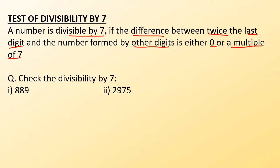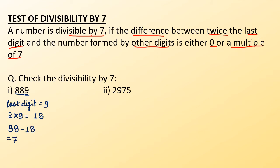First is 889. We take the last digit, which is 9. Twice the last digit: 2 multiplied by 9 gives us 18. The remaining number is 88. Now subtract 18 from 88, which gives 70. As you can see, 70 is a multiple of 7, which means that 889 is divisible by 7.